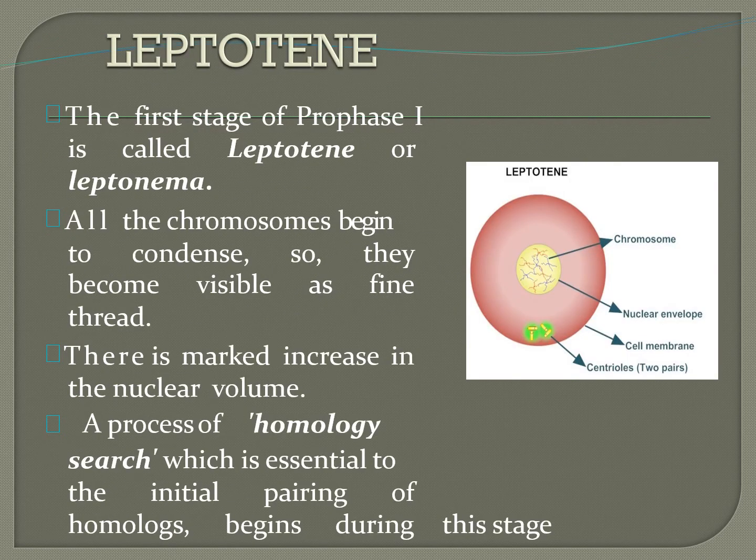Leptotene is the first stage of prophase first and is also called leptonema. Here, the chromosomes start condensation so that they become visible as fine thread-like structures. There is a marked increase in nuclear volume. A process of homologous search, essential to the initial pairing of homologous chromosomes, begins during the leptotene stage.